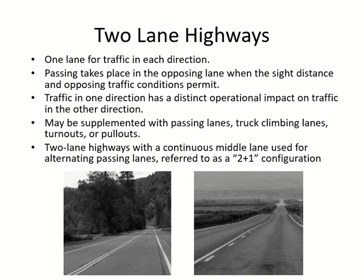On an upward gradient, a truck is much slower than on level terrain. To cancel out the effect of that slowness on traffic, you give trucks an extra lane. Until they are on the upward gradient they use the extra lane; once back on level or downward grade, they merge back. This is the truck climbing lane.